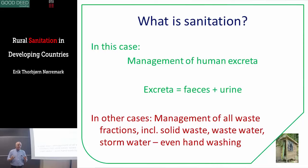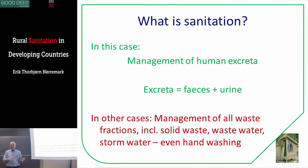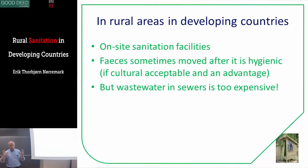The definition of sanitation depends on culture and language. In our case here, we'll be defining it as management of human excreta — excreta being faeces and urine. In other contexts it can mean management of a lot of other waste: solid waste, wastewater, storm water, and even hand washing. But we focus just on faeces and urine management. In rural areas in developing countries, most people are using on-site facilities if they have any, meaning we don't use sewers or pipes with wastewater running — it's far too expensive.